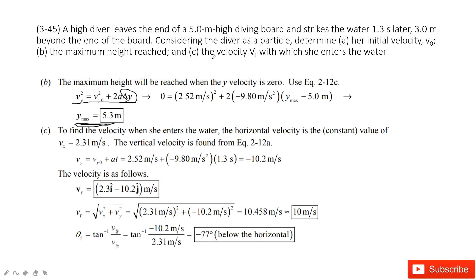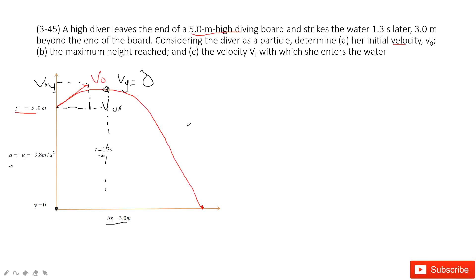The third part asks you for the velocity when she enters the water — the final velocity. We know the velocity in two components from before. At the x component, it is always constant, so vx equals v0x. The only thing we need to find is the velocity at the y component, vy, when it reaches the water.